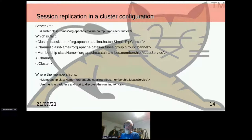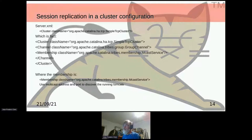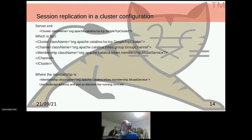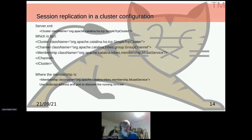So we do session replication for a cluster. In server.xml, you're going to tell that you want to use the SimpleTCPCluster — that's the easiest way to do it. It's going to create a channel and create a membership. In the case of a cluster, the membership is usually a multicast service. It uses a multicast address and a port to discover — one Tomcat is going to use the multicast address and port to discover the other running Tomcat instances in the cluster.